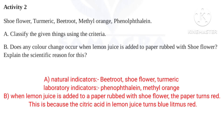Does any color change occur when lemon juice is added to paper rubbed with shoe flower? When lemon juice is added to paper rubbed with shoe flower, the paper turns red. This is because the citric acid in lemon juice turns blue litmus red. Lemon contains citric acid, which acts as an acid indicator.